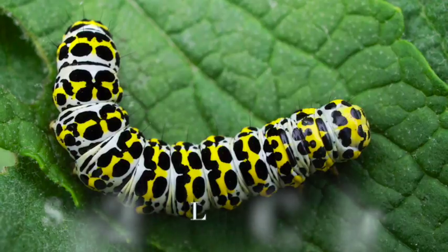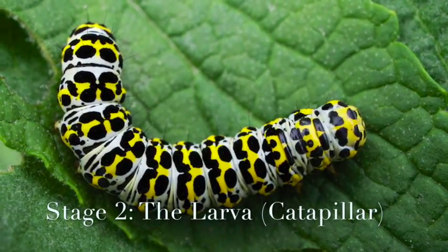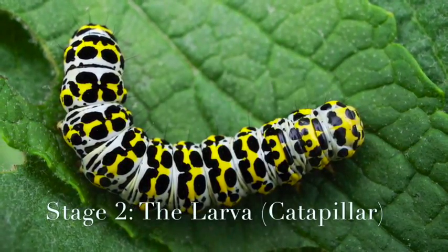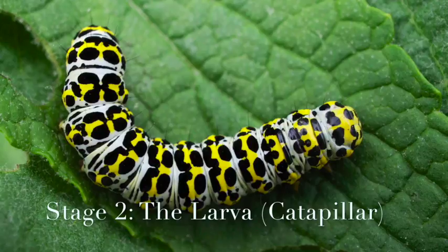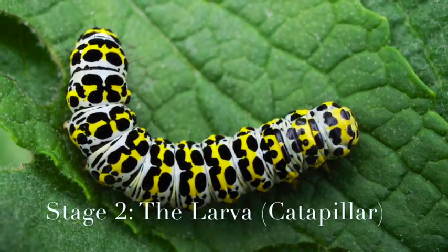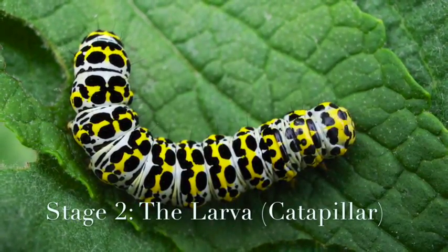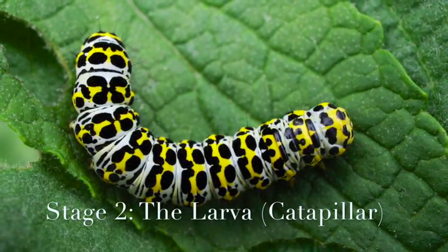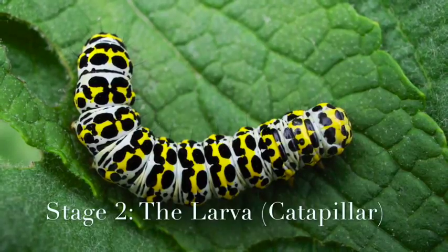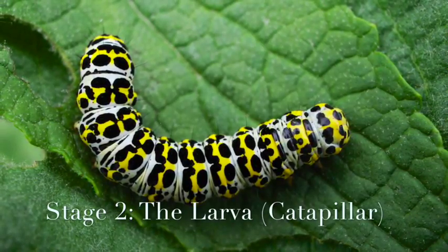After a few days the egg hatches and a caterpillar emerges from the egg. The new baby caterpillar eats the shell of the egg because it's full of nutrients. Then it leaves to find new leaves to eat.